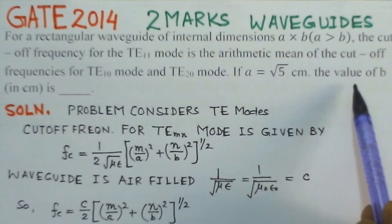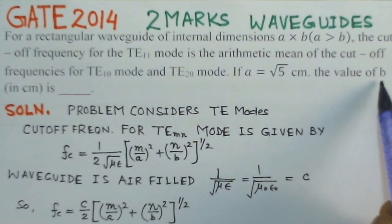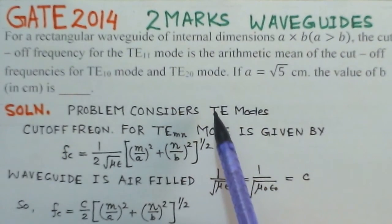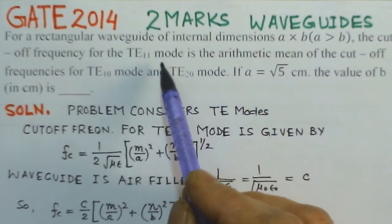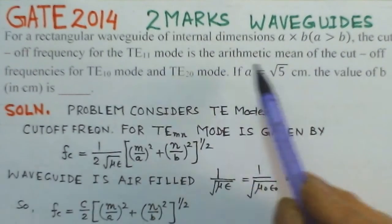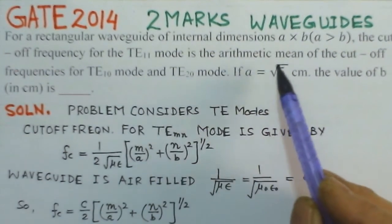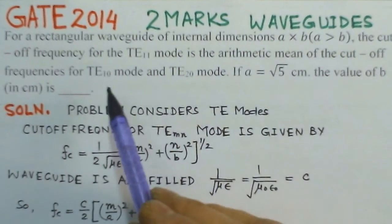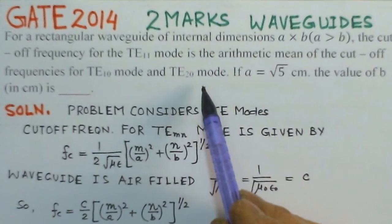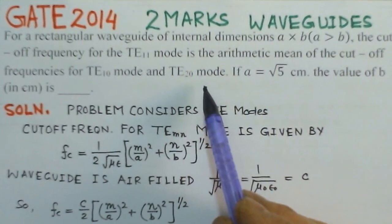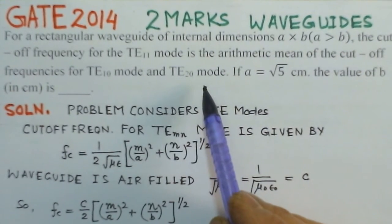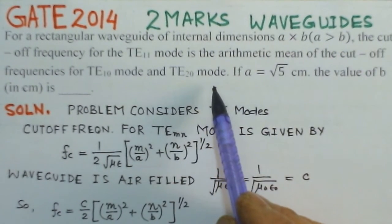So, you have to evaluate the value for B for the given condition. The condition is that the cutoff frequency for the TE11 mode is the arithmetic mean of the cutoff frequencies of TE10 and TE20 mode. So, basically we are concerned with TE modes in the waveguide only.